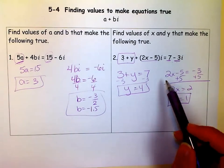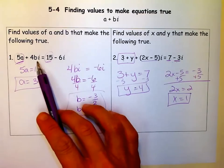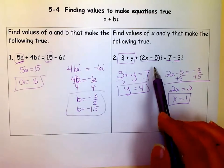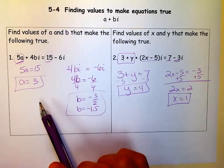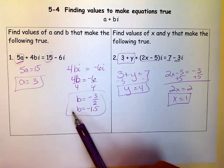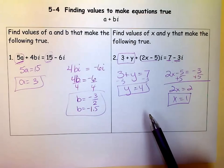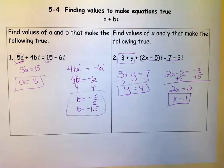So at first, when you look at these, they look really scary because they have I's and A's and B's and different variables. But if you just remember, the real part has to equal the real part, and the imaginary part has to equal the imaginary part. It's just really simple linear equations that you can do. So good luck. M squared, signing out.